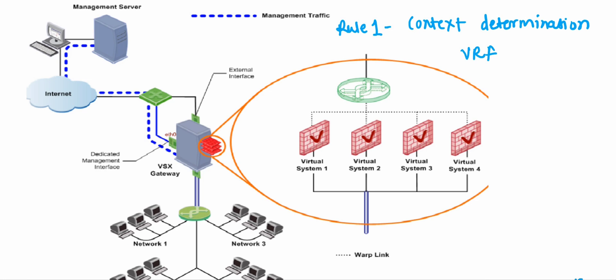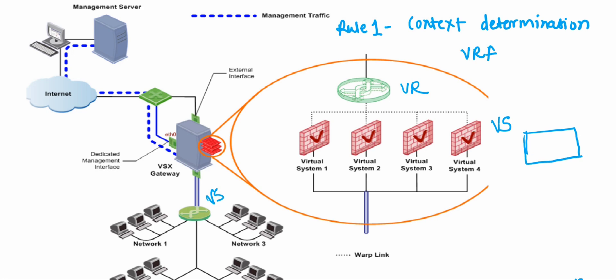VRF stands for Virtual Routing and Forwarding. It's a technique which allows the creation of multiple independent routing domains. This applies to virtual devices — consider a virtual router, a virtual switch, or a virtual system. It allows these virtual devices to create multiple independent routing domains.